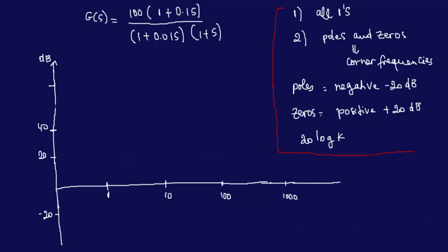If you notice this function here, we don't really have to divide and get all ones here, because you already have the 1 plus 0.1 as 1 plus here, 1 plus here. So we don't really have to worry about anything else. k here is 100. So we can go ahead and calculate our 20 log k. 20 log 100 — that's 40 dB. We know that because we don't have a pole, we don't have an S here, our plot will start at 40 dB, because that's the constant gain.